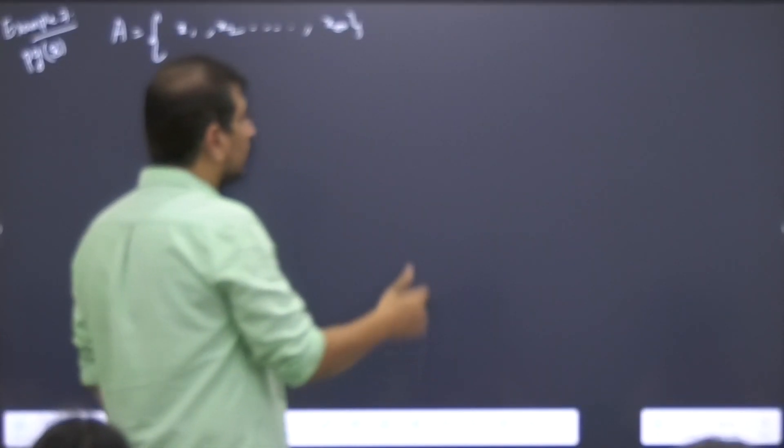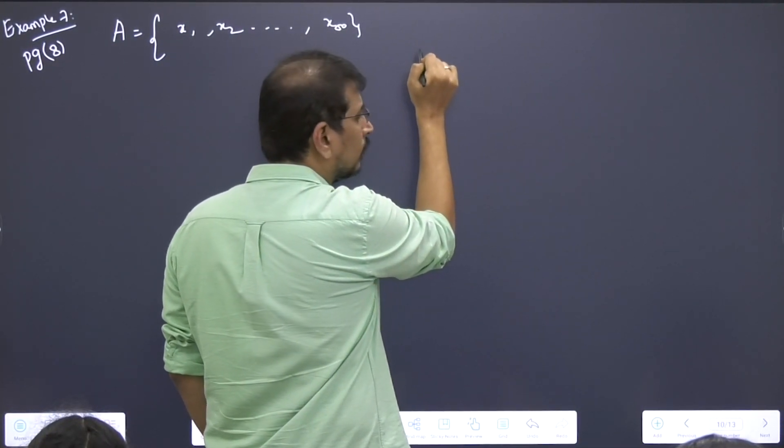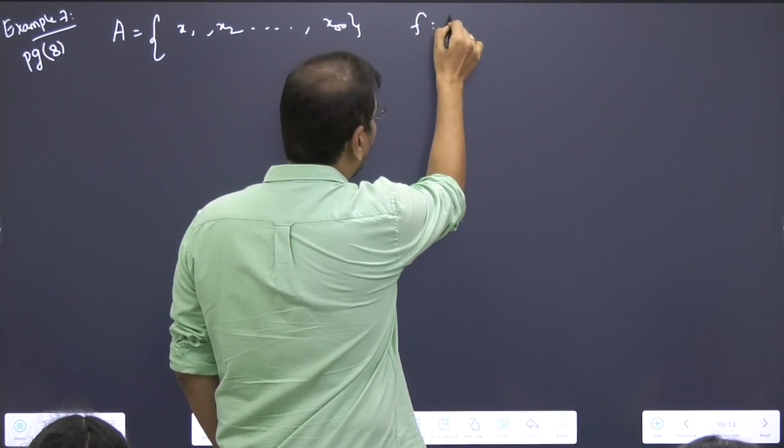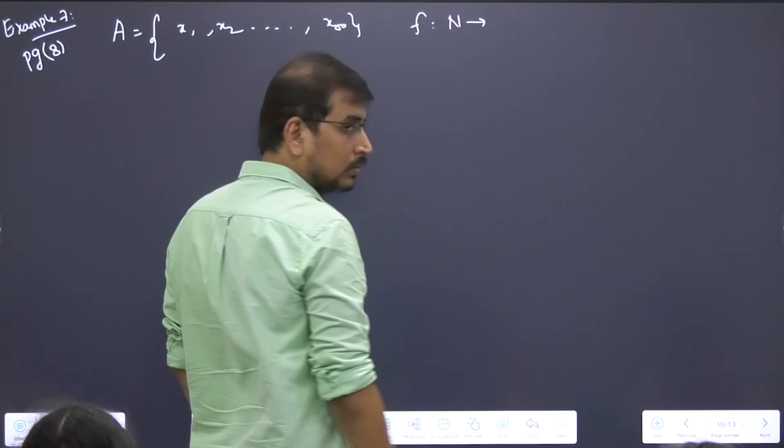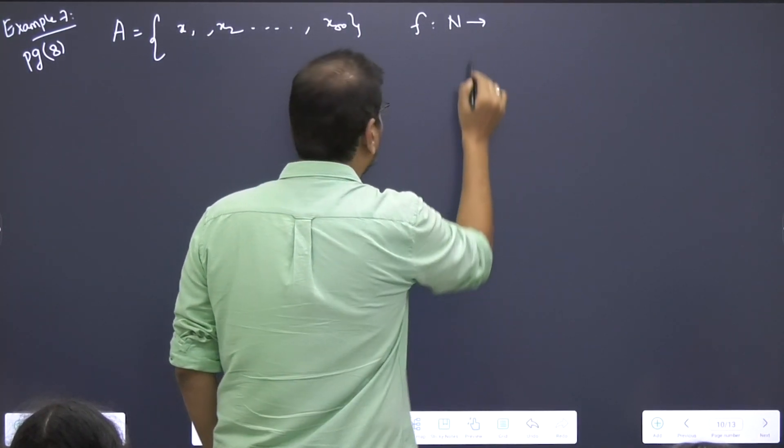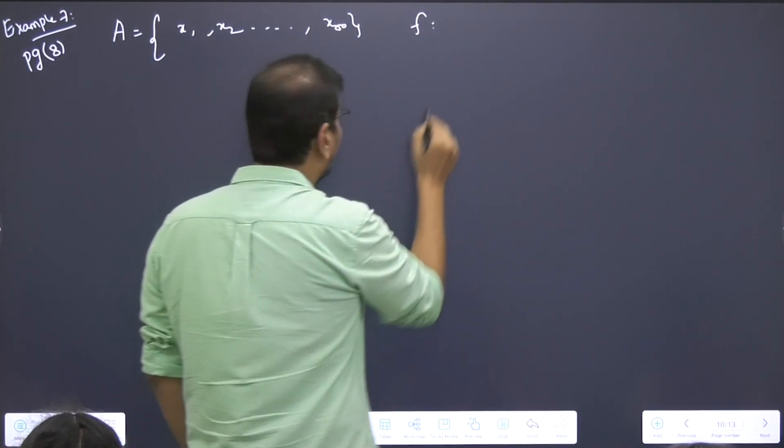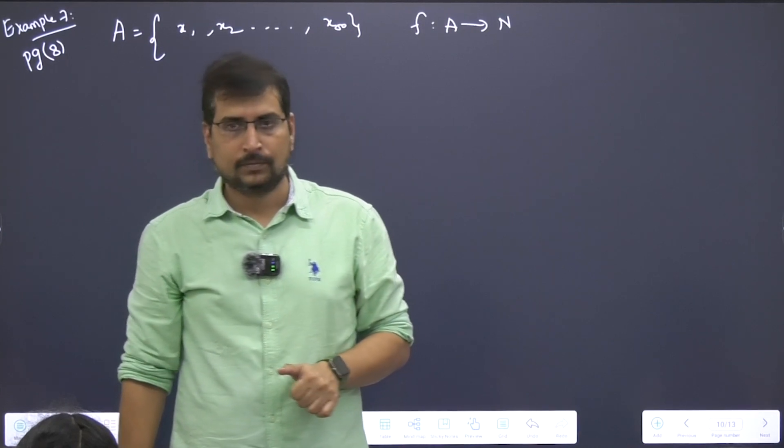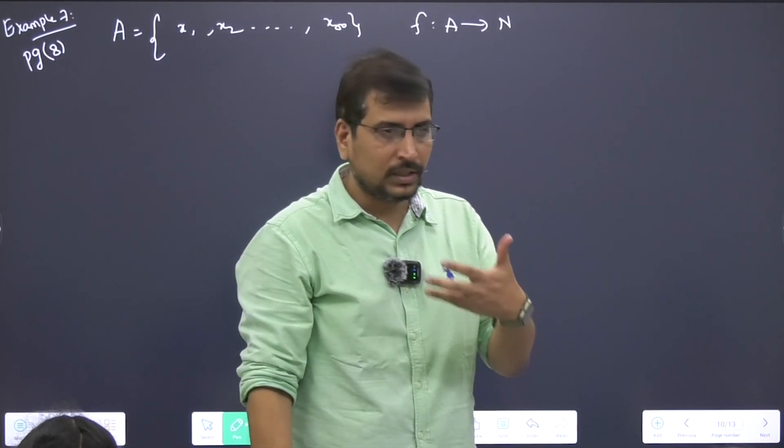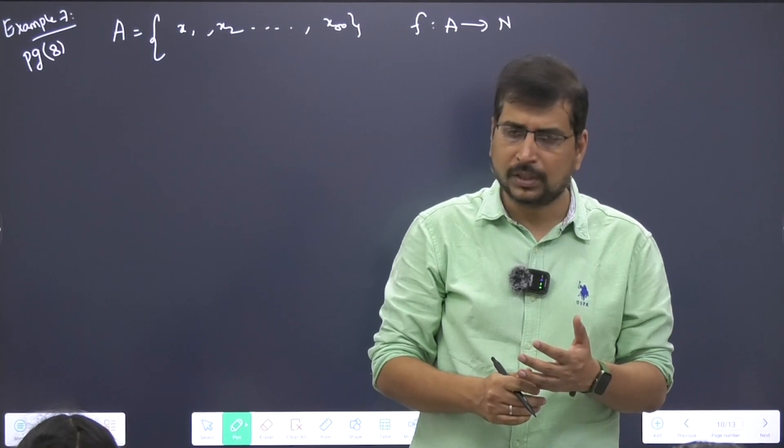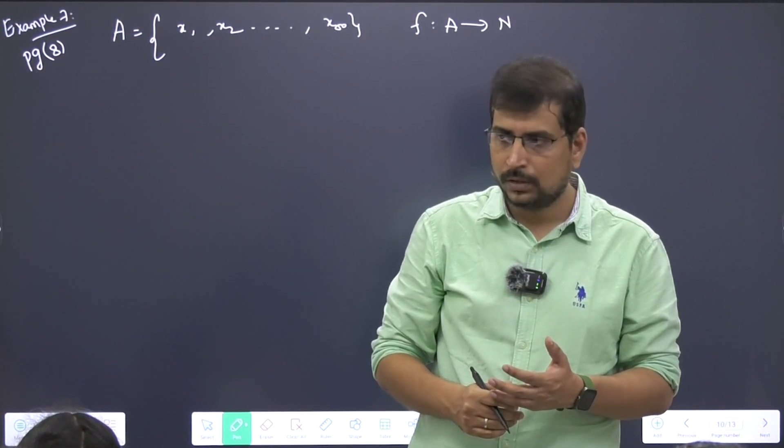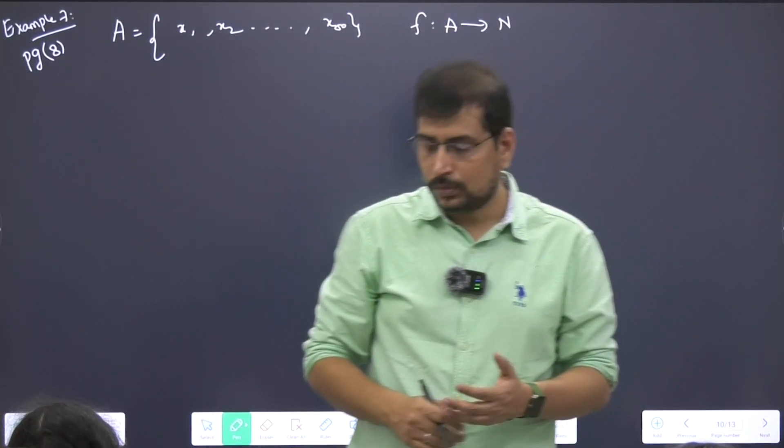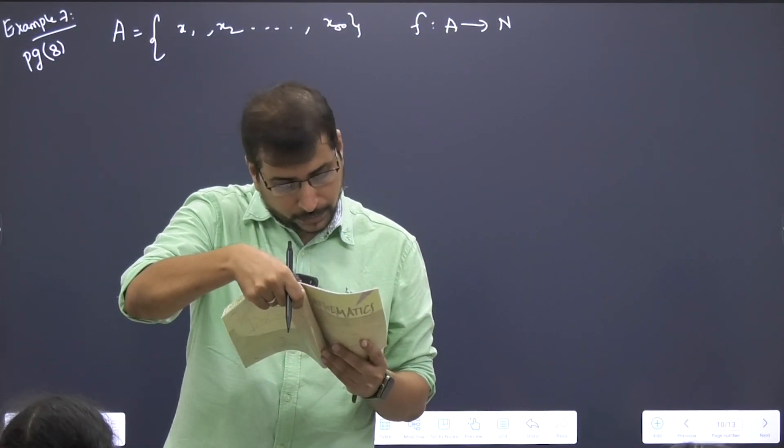Let function from A to natural number set. There is a function that is mapped from this set A to natural number set. What is that function supposed to satisfy? What is that relation? Roll number.